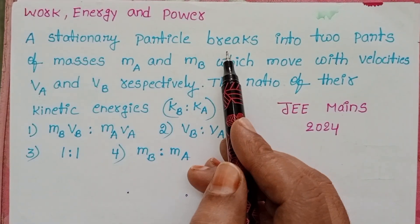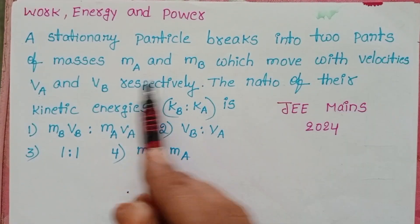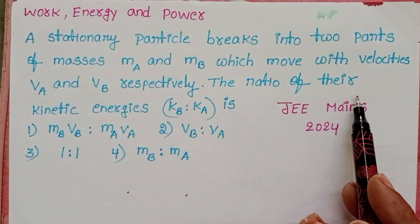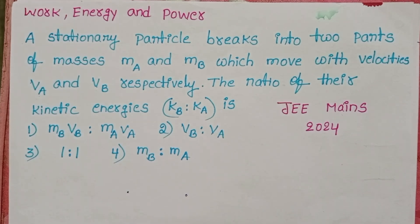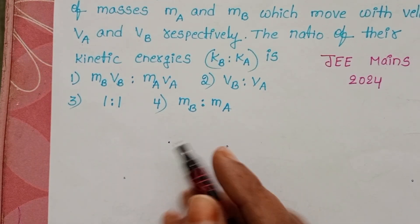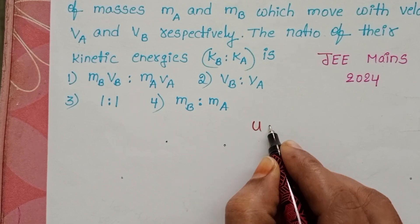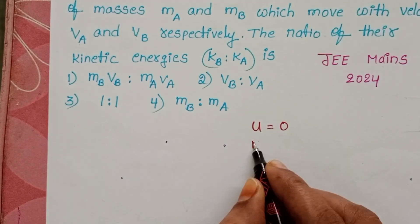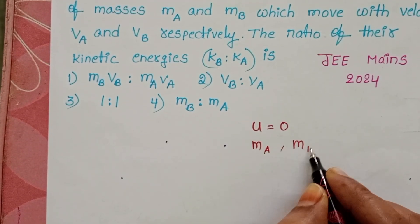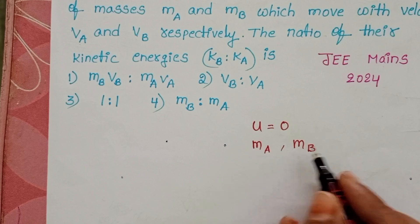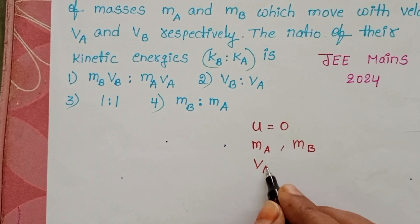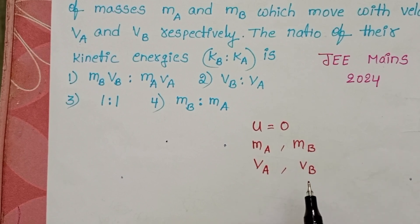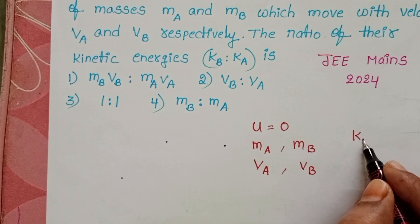A stationary particle breaks into two parts of masses Ma and Mb which move with velocities Va and Vb respectively. The ratio of their kinetic energies is to be found. Initially the particle is at rest, so its initial velocity is 0, and it breaks into two parts. Mass of the first part is Ma and mass of the second part is Mb, moving with velocities Va and Vb respectively.